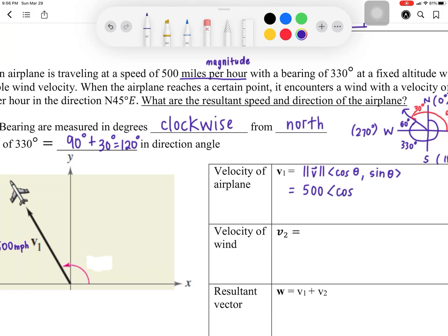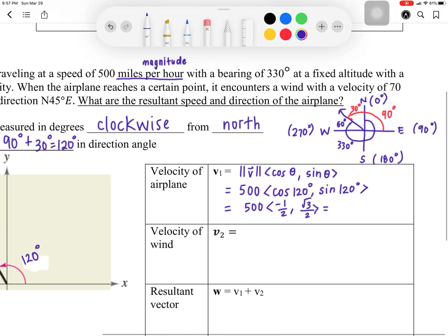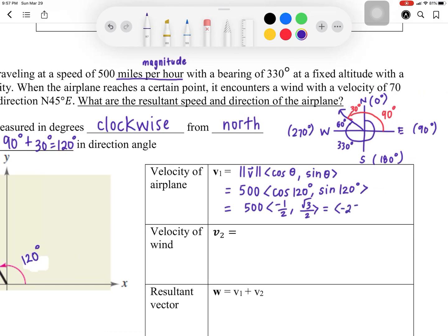Cosine, what is your direction angle? Meaning, from here to there should be about 120 degrees. So it's going to be cosine of 120 degrees times sine of 120 degrees. I'm going to let you verify here. This is going to be 500 times negative 1 half, square root of 3 over 2. Or, go ahead and simplify that. You get negative 250 and negative 250 square root of 3.